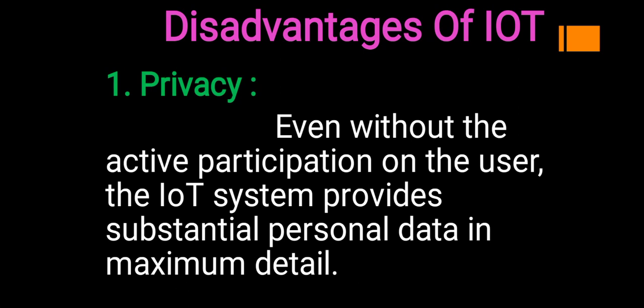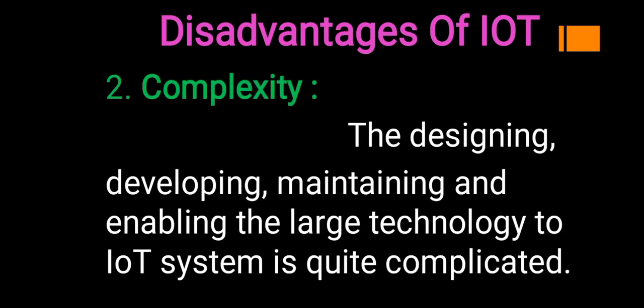The first disadvantage of IoT is privacy. Even without the active participation of the user, the IoT system provides substantial personal data in maximum detail. If a user is not actively managing the system, there are high chances of data loss and privacy breaches. Every piece of data saved through the automated system needs to be secure and private.